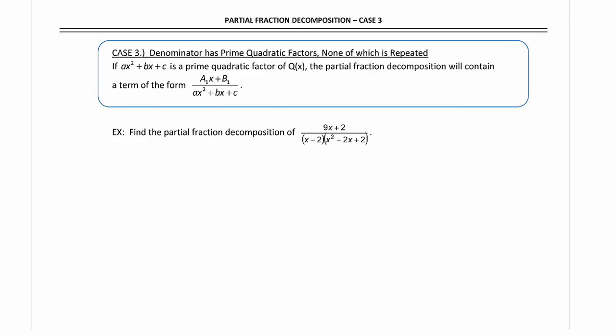When we had the linear factor in the denominator, we said that what we have in the numerator always has to be a lesser degree. So when we had a linear denominator, we had to have a constant in the numerator.